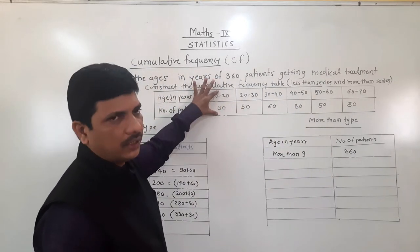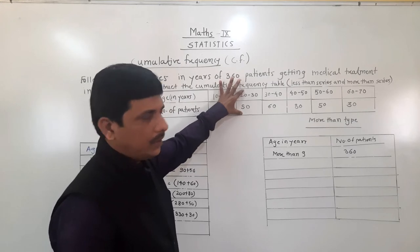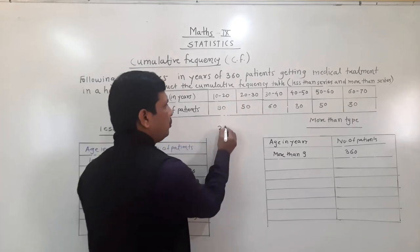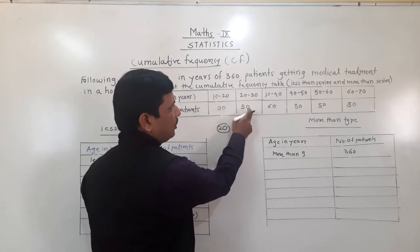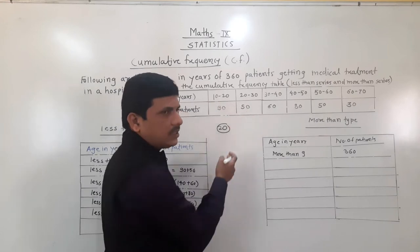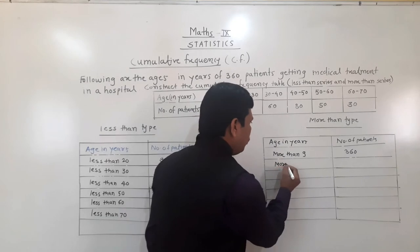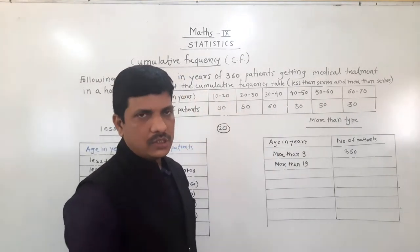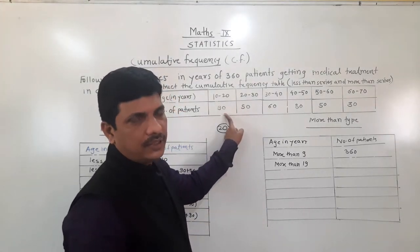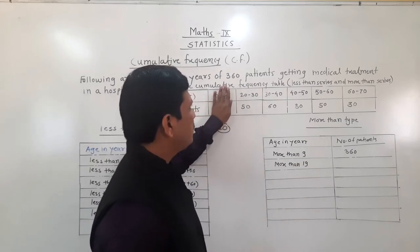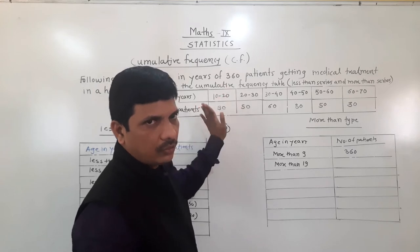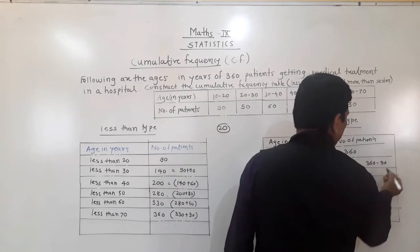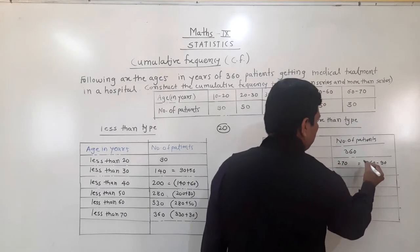Now for more than 19: why more than 19? Because if 20 comes, it goes into the next interval, so we write more than 19. The total sum is 360. So 360 minus 90 gives us 270 for more than 19.